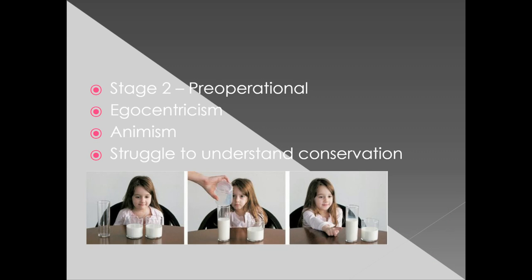The second stage is the preoperational stage, from about 18 months up to about six years old. One key feature is egocentrism — the idea that a child can only look at things from their own perspective, meaning they struggle with empathy and can't view an idea the way someone else might. A prime example: if you ask a four-year-old, 'Do you have a brother?' and he says 'yes, his name is Matt,' and then you ask 'Does Matt have a brother?' he would say 'no,' because he can only think from his own perspective.